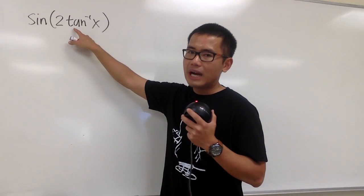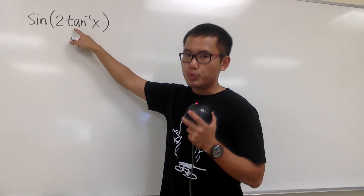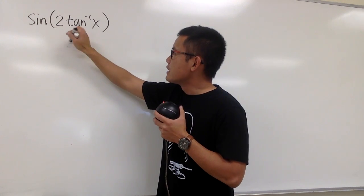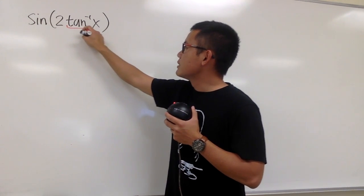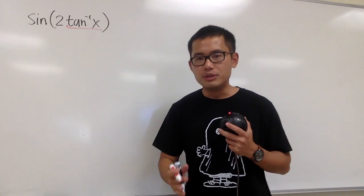First of all, remember, whenever we have an inverse trig function, they all represent an angle. In this case, we have the inverse tangent x right here. That represents an angle as well.